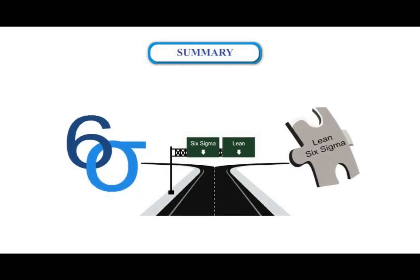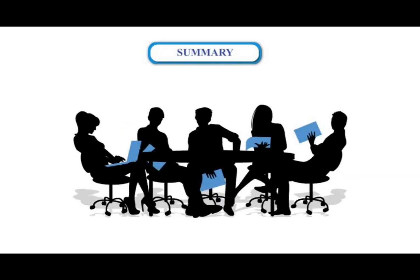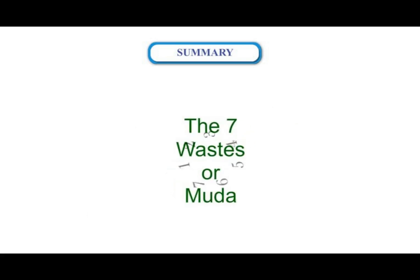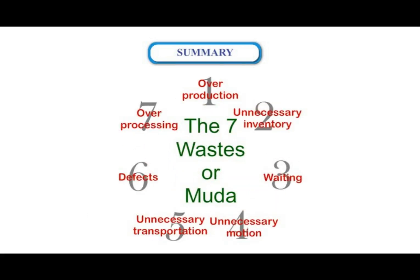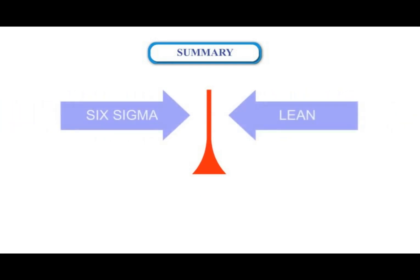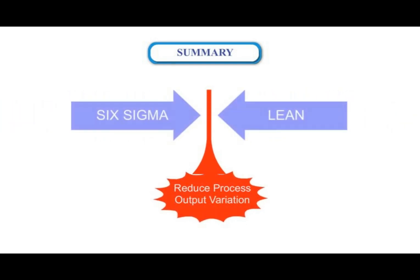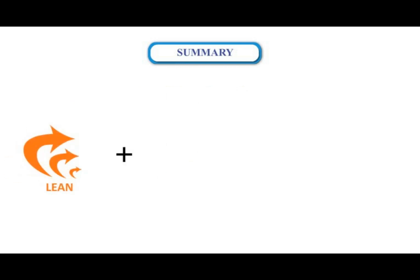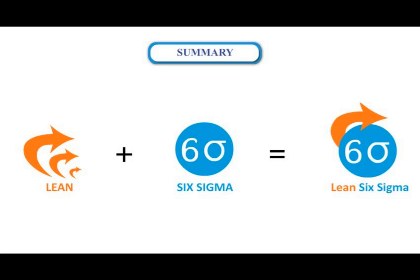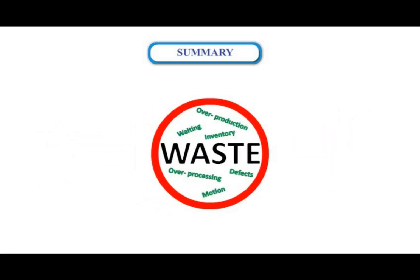Lean Six Sigma is a synergized managerial concept of Lean and Six Sigma that results in the elimination of the seven kinds of waste, or Muda. The objective of Lean Six Sigma quality is to reduce process output variations.